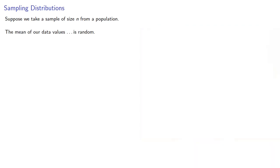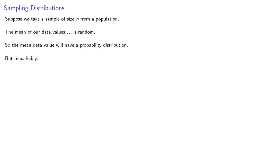The mean of our data values is random, so the sample mean will have a probability distribution. Now, while there are many different possibilities for this distribution, and our original data could have any probability distribution whatsoever, remarkably enough, this sample mean has a very familiar distribution — it's normally distributed — and this leads to what's known as the central limit theorem.